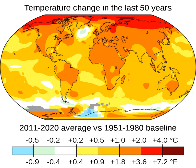As more CO2 and heat are absorbed by the ocean, it acidifies, its circulation changes, and phytoplankton take up less carbon, decreasing the rate at which the ocean absorbs atmospheric carbon. Climate change can increase methane emissions from wetlands, marine and freshwater systems, and permafrost.